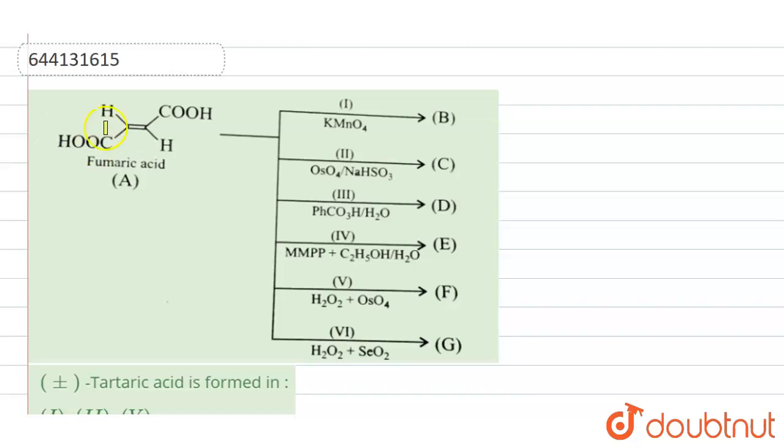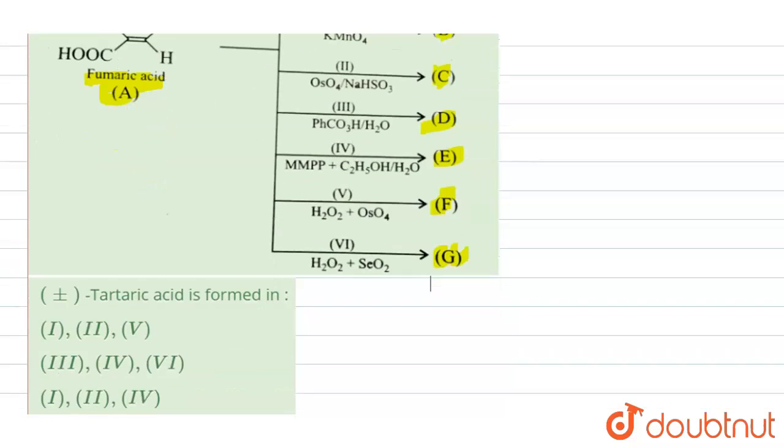In the question, we have fumaric acid which reacts with different reagents and we have the formation of different products. Here we have to see what products will be formed, and on the basis of that, we will answer the question that plus-minus tartaric acid is formed in which reactions.